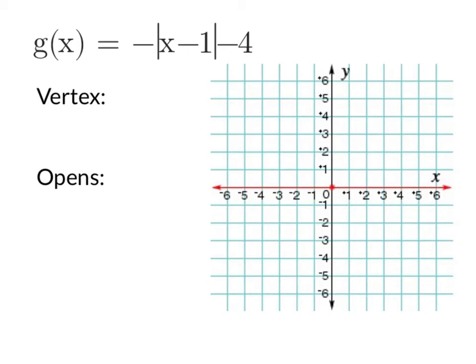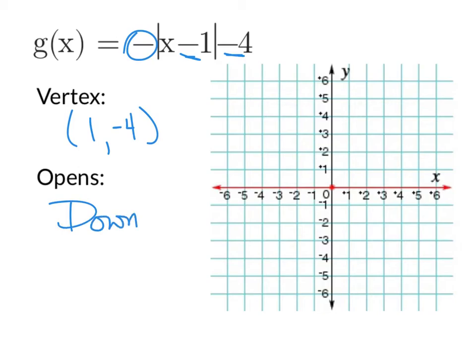If we have g of x equals negative absolute value of x minus 1 minus 4, our vertex is going to be the opposite of the inside. So the opposite of negative 1 is plus 1, and the same as what's outside, negative 4. Now when we look out in front, we have this negative sign — that means it's going to open down. So we go find our vertex at 1, negative 4, right here, and we're going to make that distinctive V shape because it's absolute value, but opening down — this way and this way.